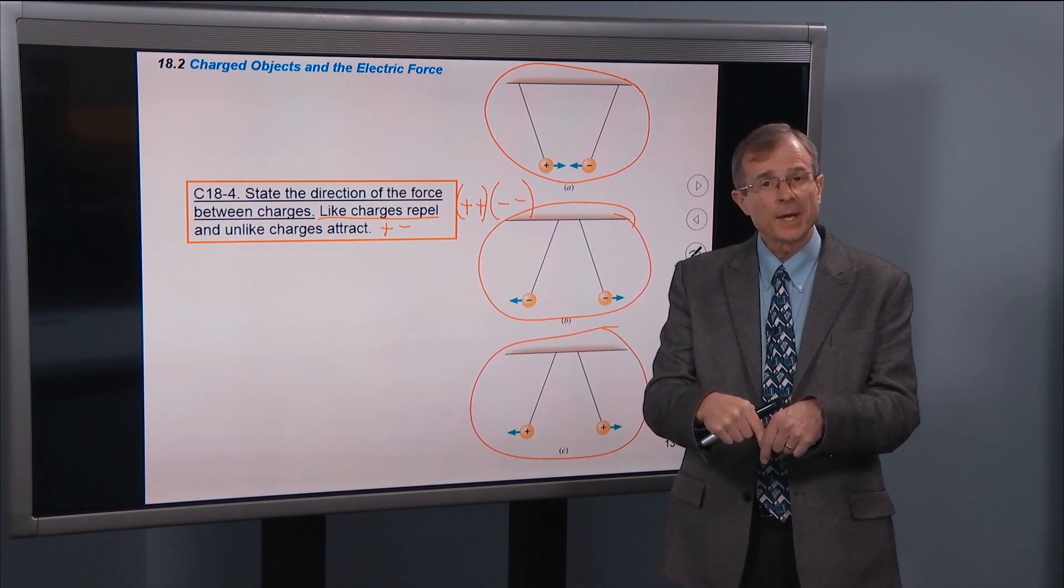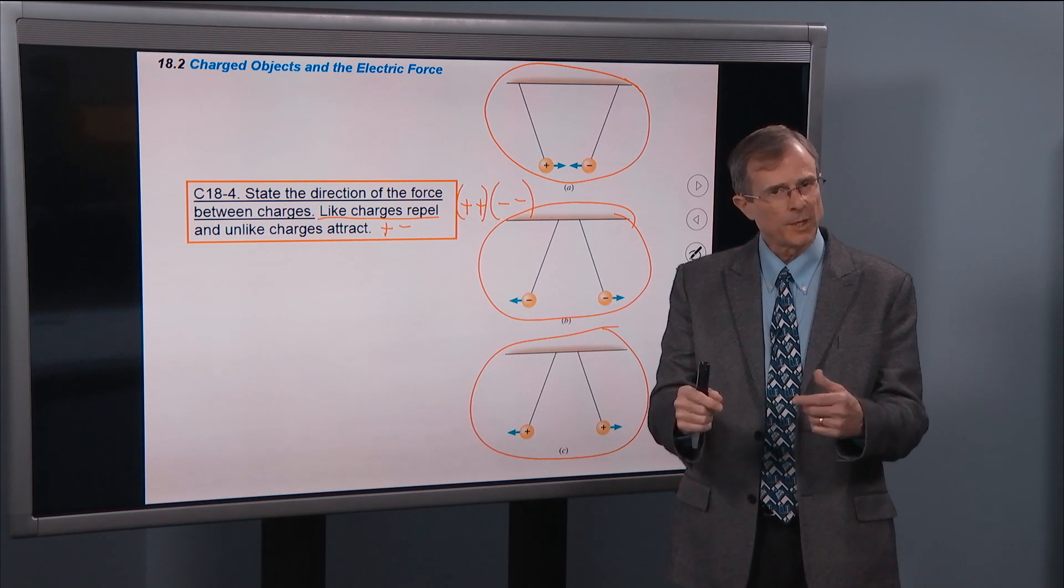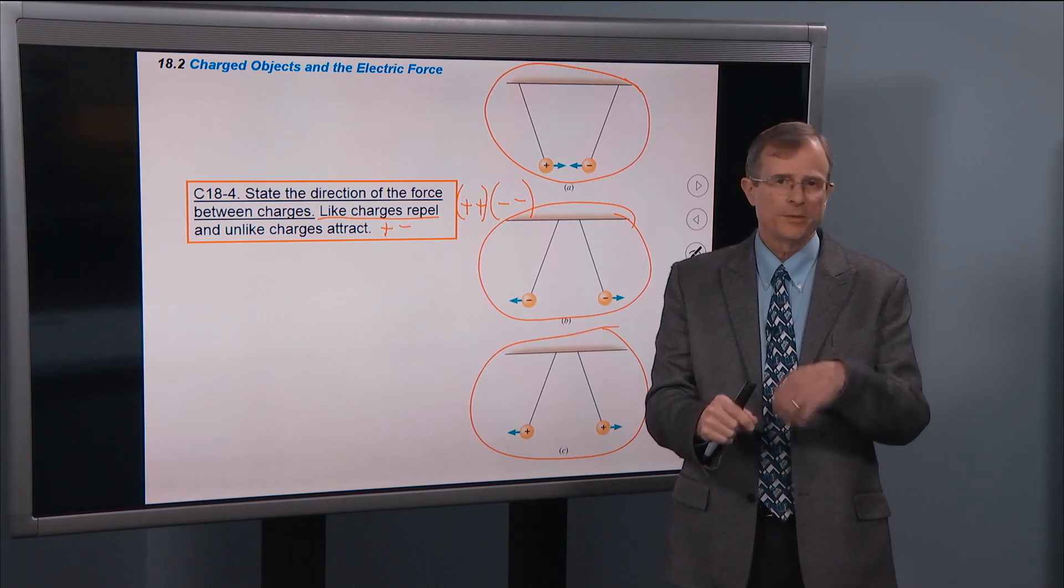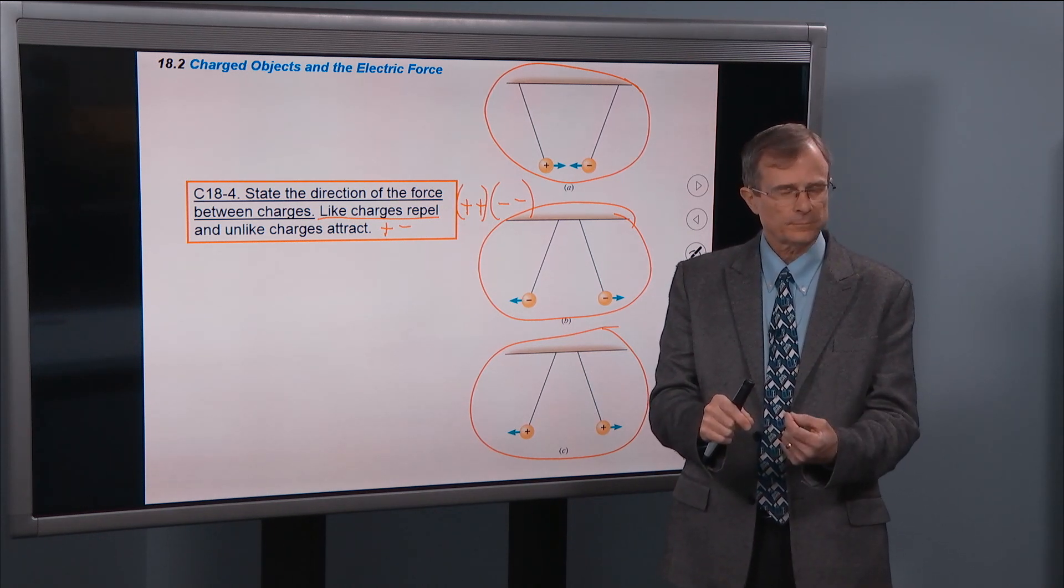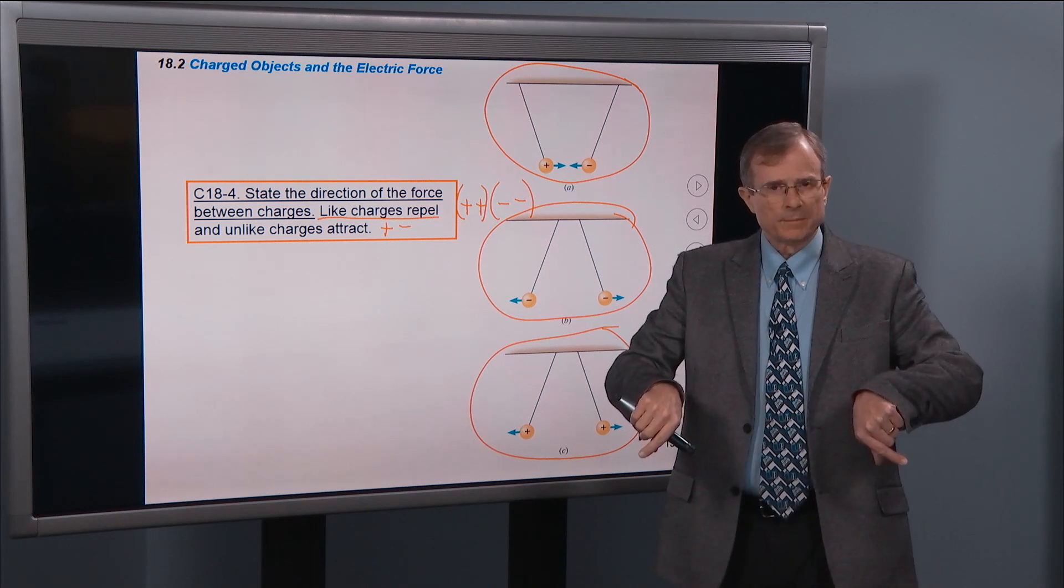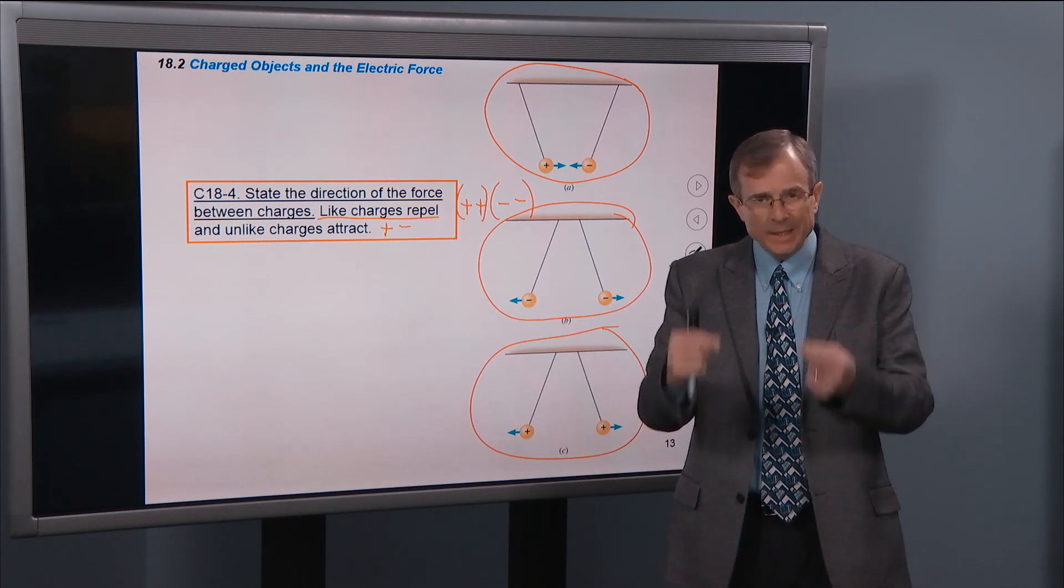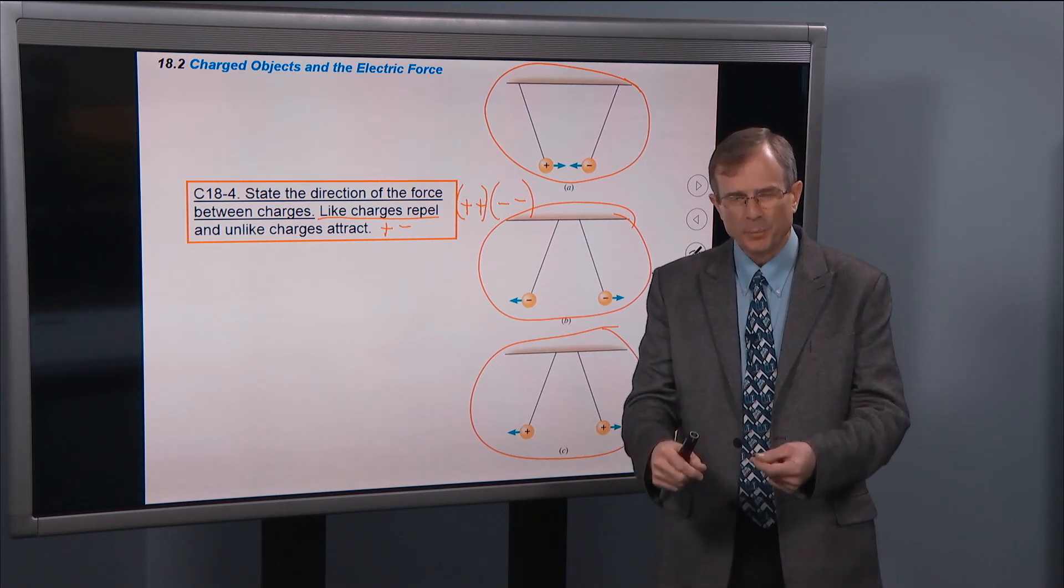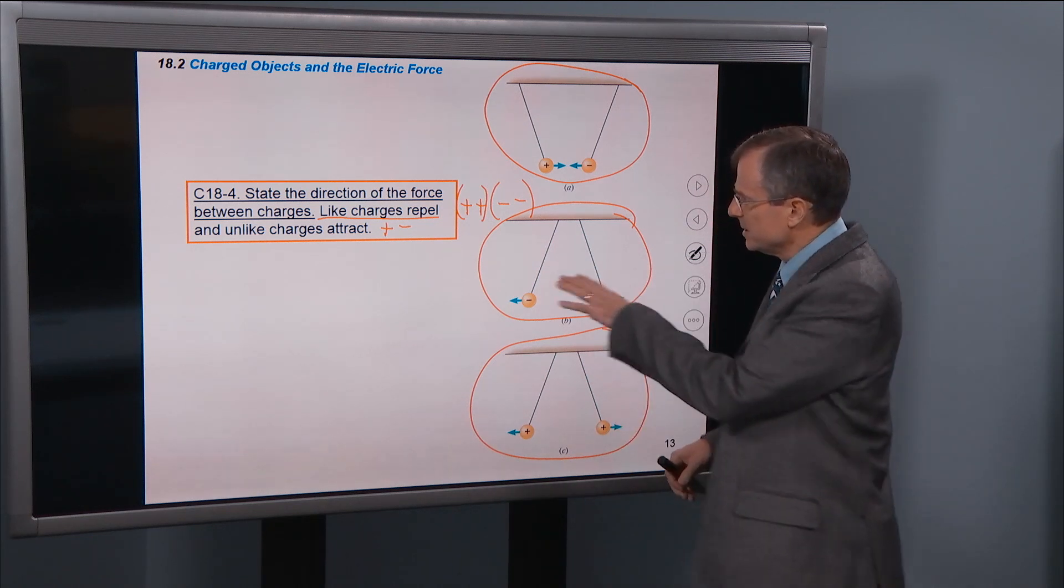Well, if they attracted each other, we know that one of them, not sure which one, had to be positive, and the other one had to be negative. If they repel each other, then we know that either both of them are positive, or both of them are negative. And this simple concept